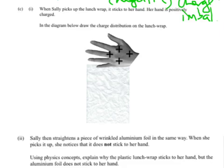C part one. When Sally picks up the lunch wrap, it sticks to her hand. Her hand is positively charged. In the diagram below, draw the charge distribution on the lunch wrap. So here we have the positively charged hand with all the positive charges. And here's the lunch wrap.